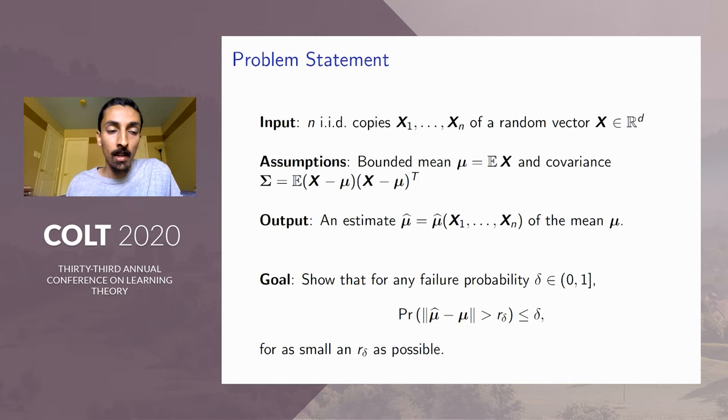So the setup is as follows. We're given n i.i.d. copies of a random vector X in R^d, which has mean μ and covariance Σ. Here I'm only assuming existence of two moments. I don't want to make any stronger assumptions. The desired output is an estimate μ̂ of the true mean μ.